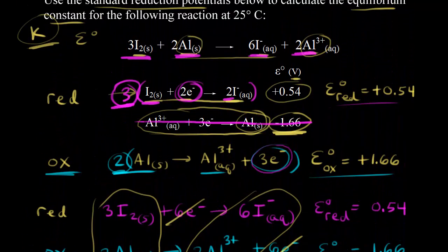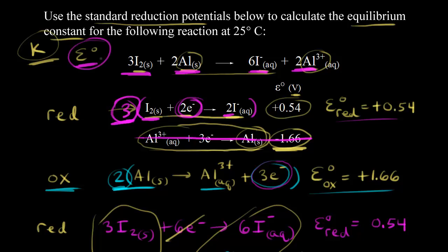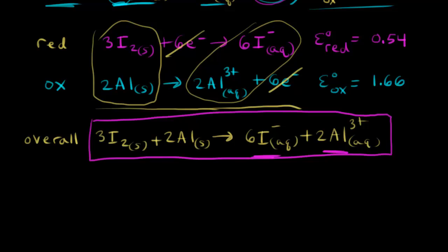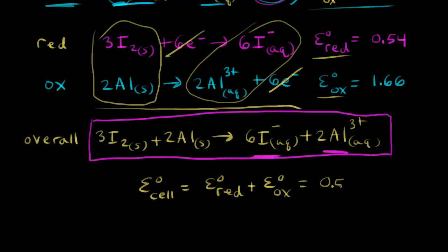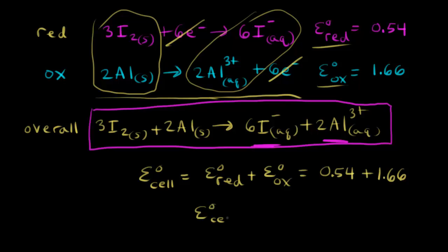Our goal was to find the standard cell potential E zero, because from E zero we can calculate the equilibrium constant K. To find the standard cell potential, we add the standard reduction potential and the standard oxidation potential: positive 0.54 volts plus positive 1.66 volts. So E°cell equals 0.54 plus 1.66, which equals 2.20 volts.